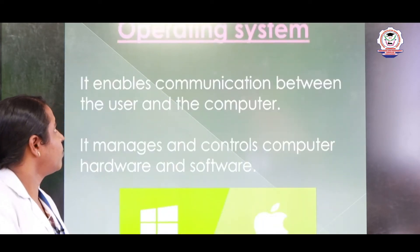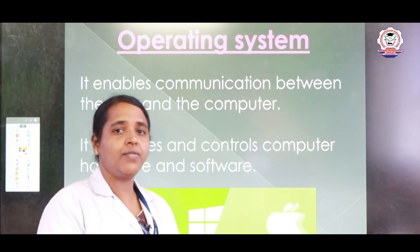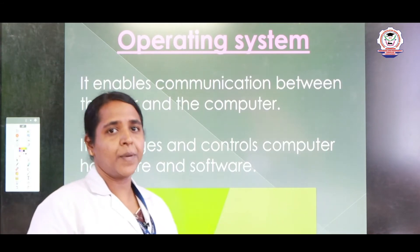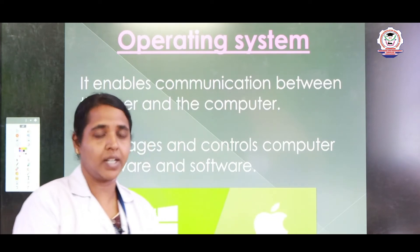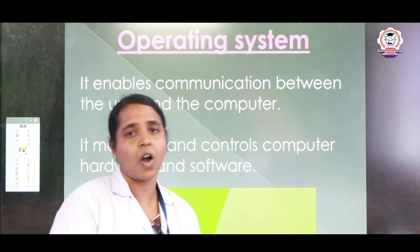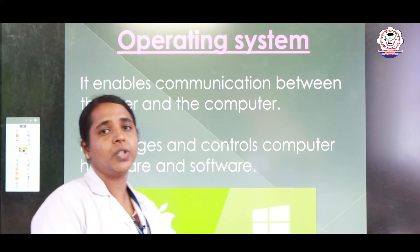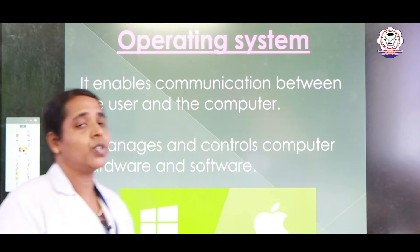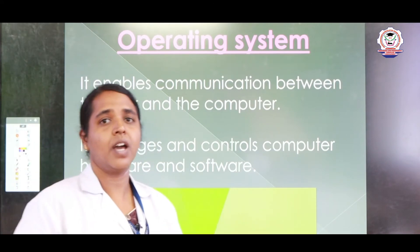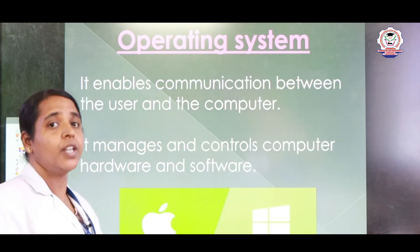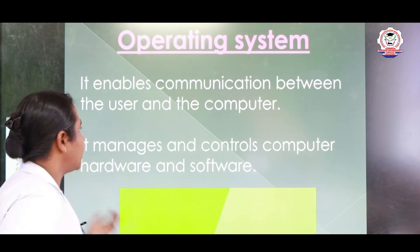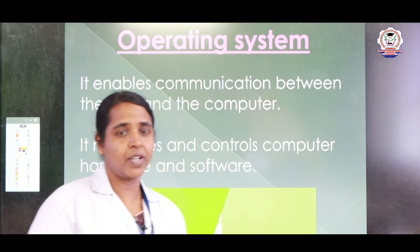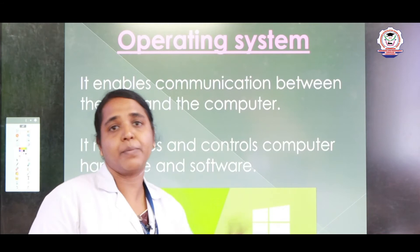So first we can see the operating system. Everyone knows about operating systems. It is a software. Without operating system, a computer cannot run. Just as hardware is required, software is also very important to run the computer. It enables communication between the user and the computer. It manages and controls the computer hardware and software. So the operating system plays a major role in a computer.